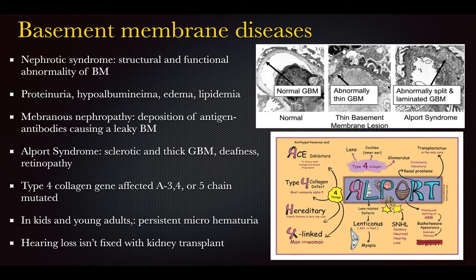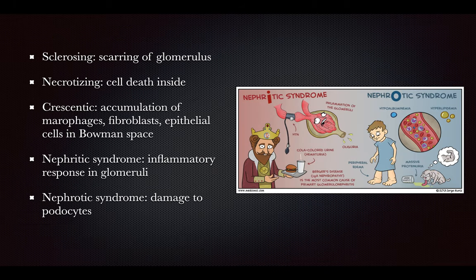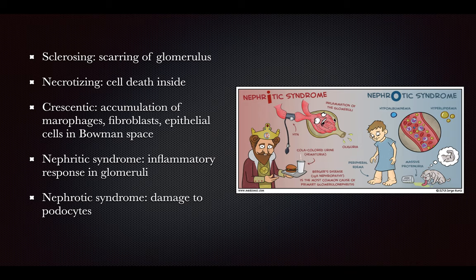On histology, a normal GBM is visible; in Alport's syndrome it is very thin and split. Sclerosing glomerulonephritis involves scarring of the glomerulus replaced with scar tissue. Necrotizing glomerulonephritis involves cell death inside the glomerulus. Crescentic glomerulonephritis is the accumulation of cells that shouldn't be in Bowman's space. Nephritic syndrome is an inflammatory response in the glomeruli producing hematuria and oliguria — also known as Berger's disease and the most common cause of primary glomerulonephritis.